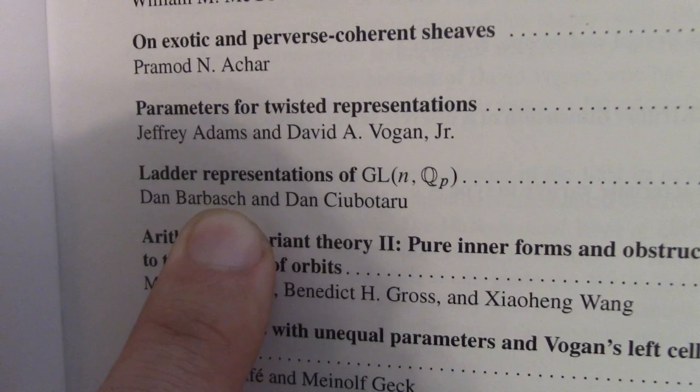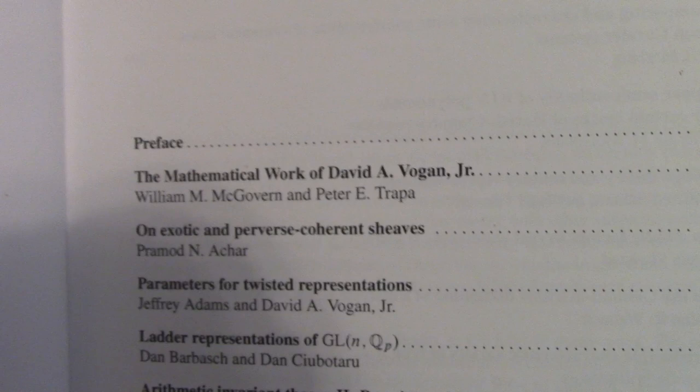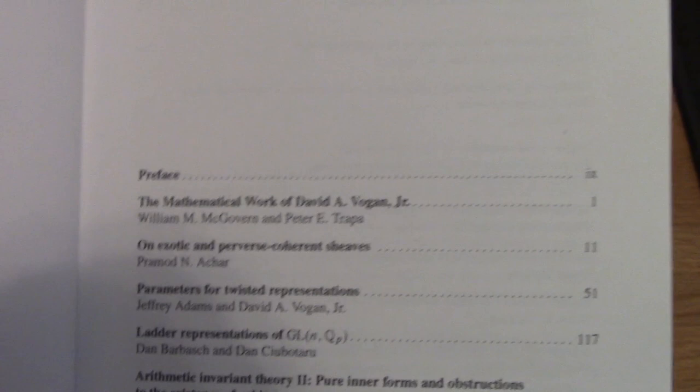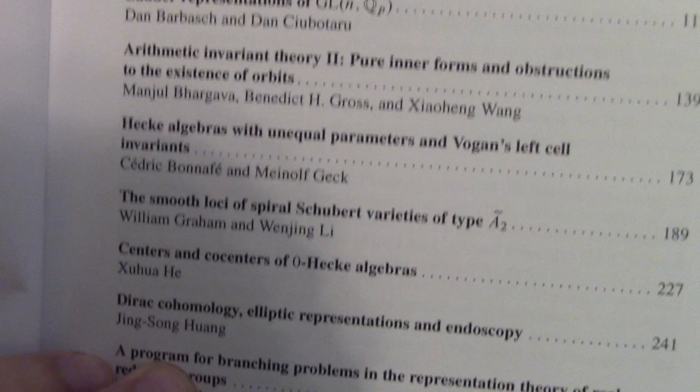There's a whole bunch of other stuff in this volume — at the beginning there's an overview of a bunch of stuff Vogan has done, and topics including perverse sheaves and different kinds of Hecke algebras, both Archimedean and non-Archimedean things. It's really just a collection of papers from a conference in honor of Vogan's birthday. It's a nice random find — you never know what you're going to discover in some random printed book of papers.